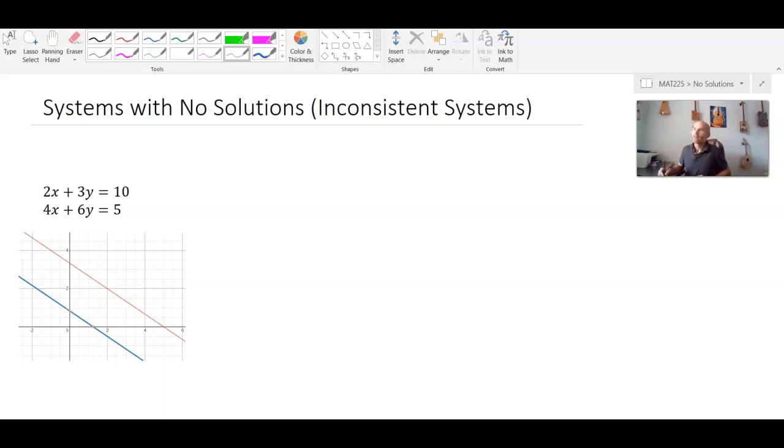So here we have a two-dimensional system. We'll also look at a three-dimensional one. 2x plus 3y equals 10. 4x plus 6y equals 5.